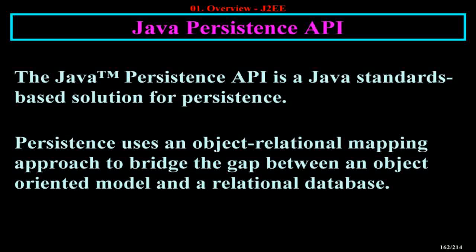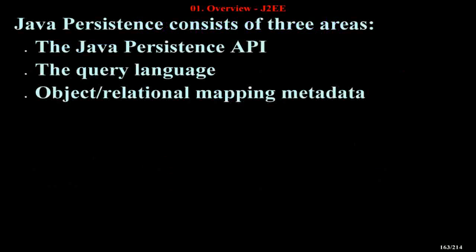The Java Persistence API is a Java standards-based solution for persistence. Persistence uses an object-relational mapping approach to bridge the gap between an object-oriented model and a relational database. Java Persistence consists of three areas: the Java Persistence API, the query language, and object-relational mapping metadata.